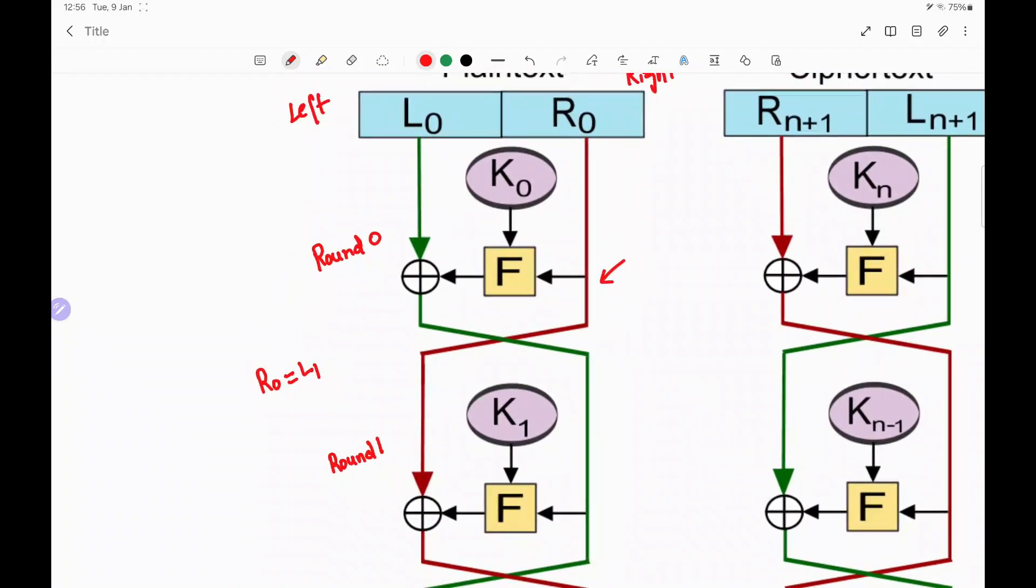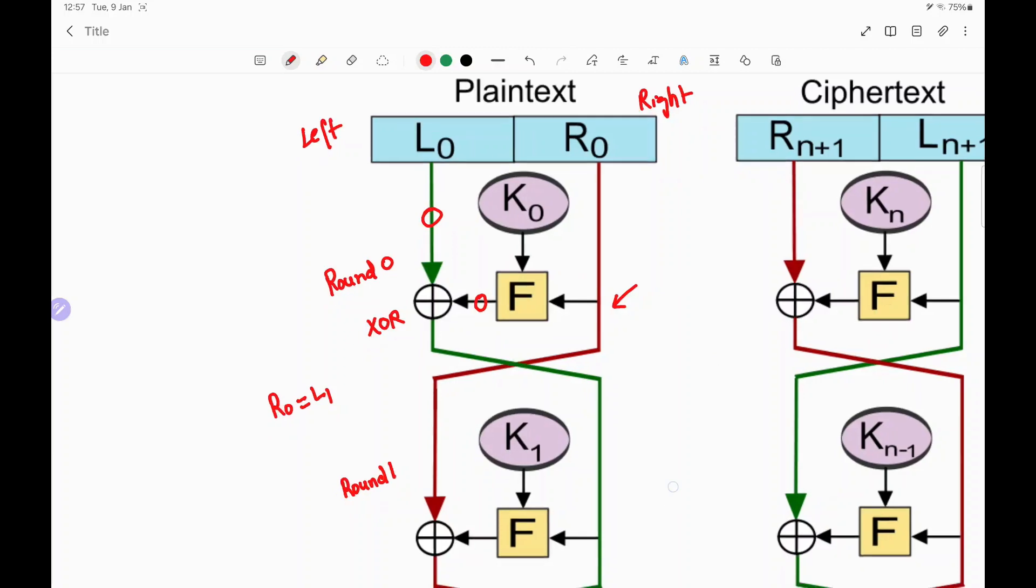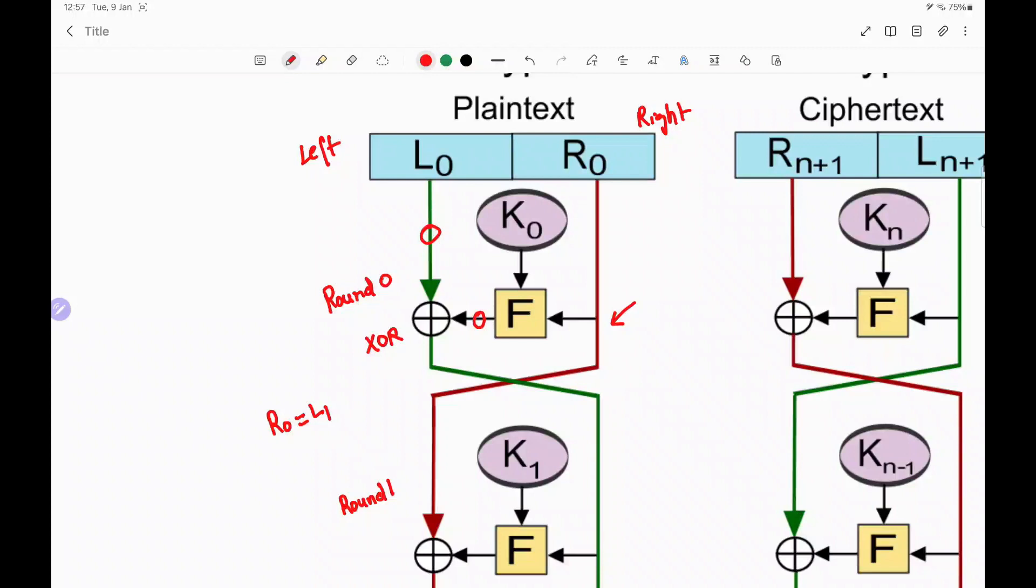Next, what happens is L0. Now L0 is one of the inputs to an operation. That operation is nothing but an XOR operation. Now what are the other inputs to this XOR operation? The XOR operation has a direct input in the form of a function. So what happens is, there is a function block for each of the rounds.